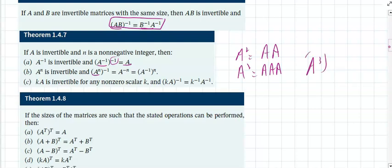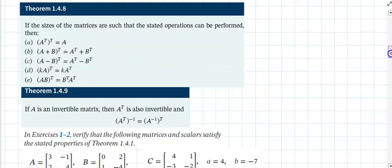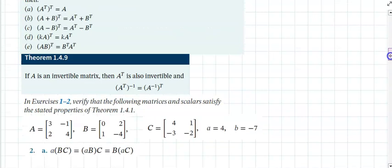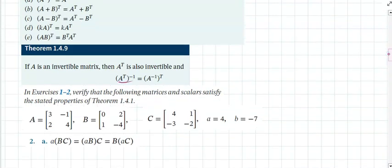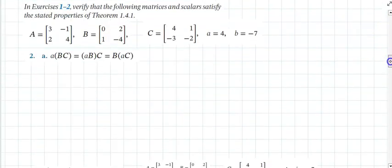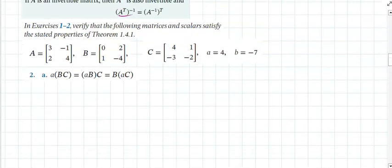If you have A cubed and you take the inverse of that, that equals finding the inverse of A and multiplying it by itself three times. Also, the inverse of the transpose of A equals taking the transpose of the inverse of A. You don't need to memorize all these — just look them up and verify as needed.